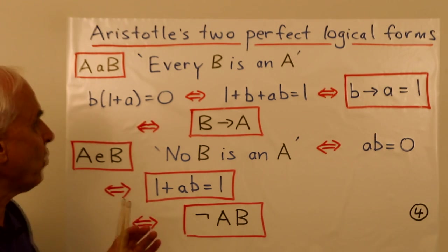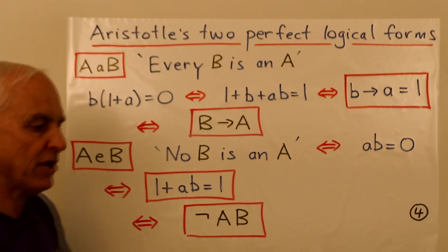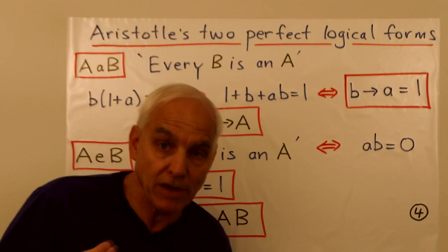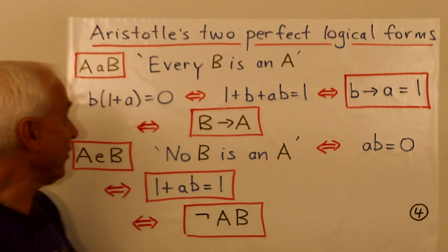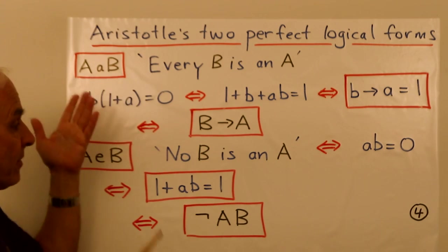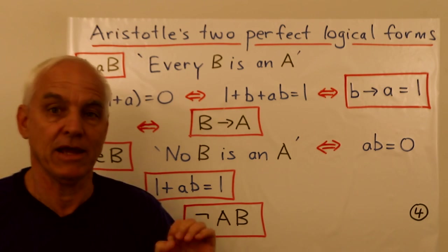Now we might write that in propositional logic language as just the statement that capital B implies capital A. So that's a way of taking Aristotle's form with this little a and converting it into something which is more readily recognizable in the propositional logic world. So this premise is really just the same as the premise that b implies a.